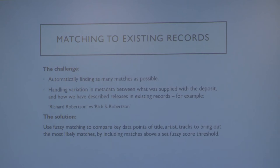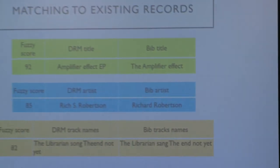For example, a name could be recorded in different ways, so exact matching wouldn't work well. To solve this, Jay wrote a script to compare the metadata in the DRM master spreadsheet with all digital music records in our collection. It pulled out the title, artist, and tracklist strings for each release, then used fuzzy matching to compare how similar those strings were with those in the bib records. The process returned a fuzzy score between 0 and 100, with 100 being an identical match.